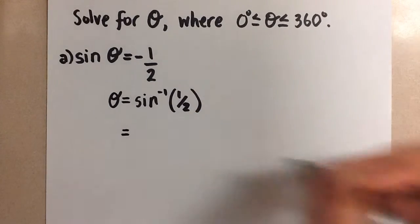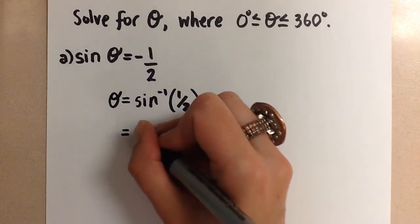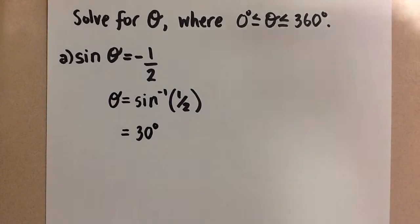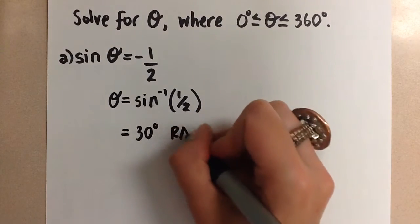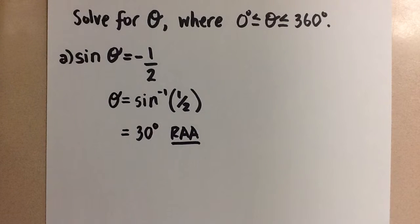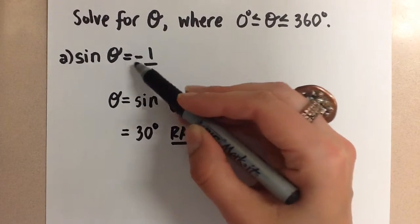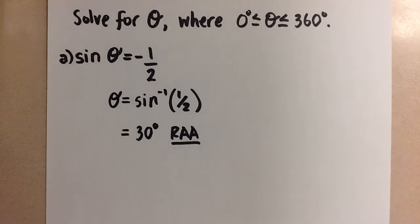So when you do this we end up getting 30 degrees for theta. So this is the related acute angle but we can put that in all four quadrants if we wanted to. The indicator that tells us which quadrants to put the terminal arm is that negative on this sine function.